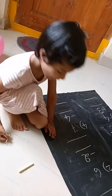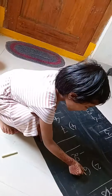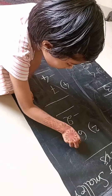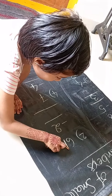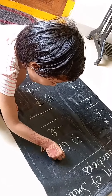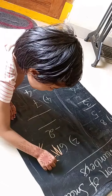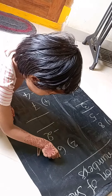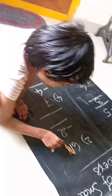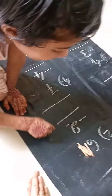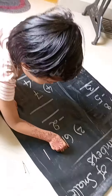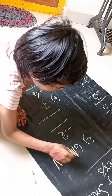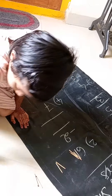We have 6 maths sticks: 1, 2, 3, 4, 5, 6. If I take 2 maths sticks — 1, 2. Answer is 4.